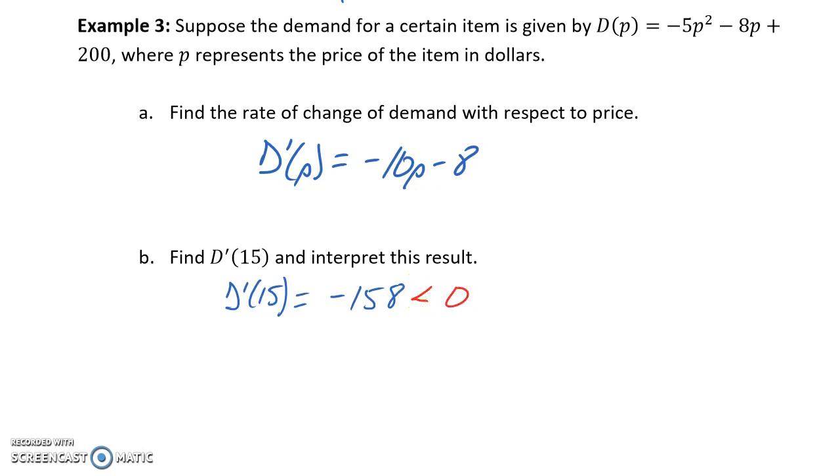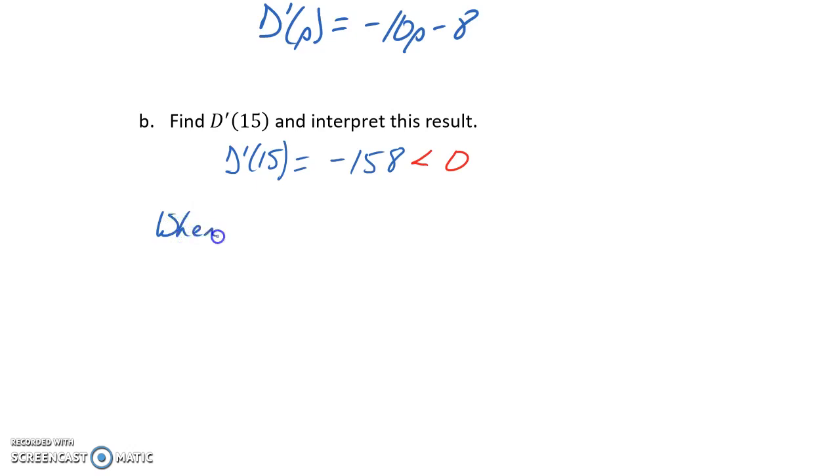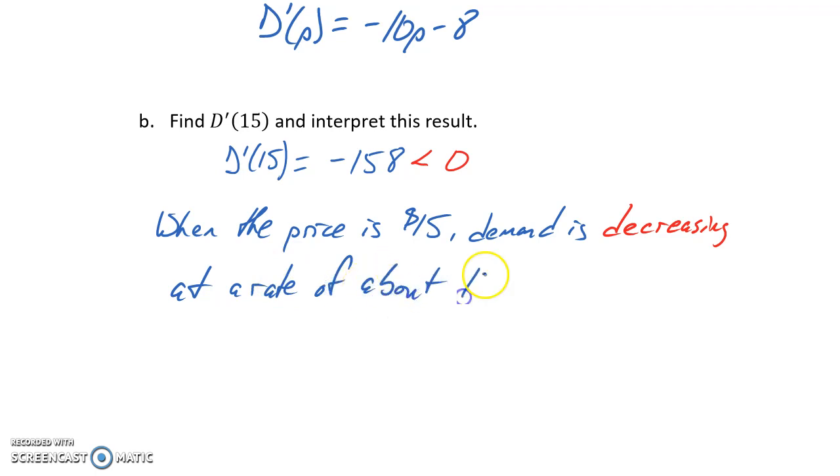So in this case we have a negative result, and we want to provide an interpretation for that result. This would tell us that when the price is $15, which is the value that we plugged in for p in our marginal demand function, demand is decreasing in this case since the result from our derivative function was negative.